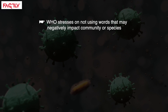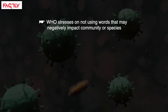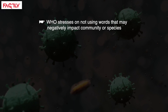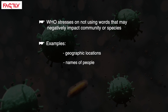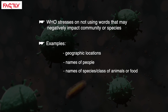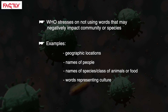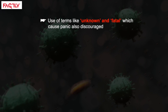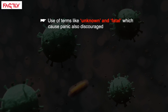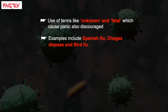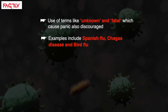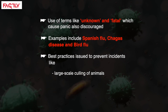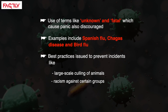The WHO stresses on not using certain words to name diseases, as these may have a negative impact on a specific community or species. Examples include geographic locations, names of people, names of species or class of animals or food, words representing culture, population and occupation. Use of terms like unknown and fatal, which may cause panic, are also discouraged. Examples of problematic names include Spanish flu, Haga's disease and bird flu. The best practices were issued to prevent incidents like large-scale culling of animals and racism against certain groups of people.